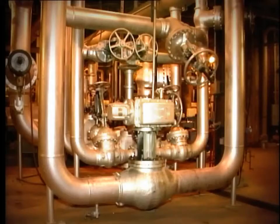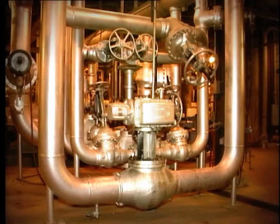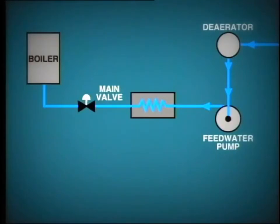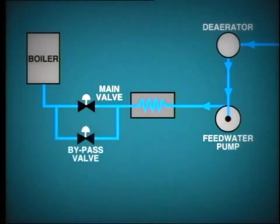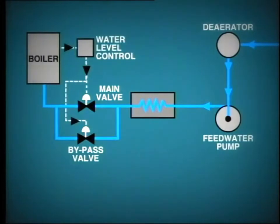One of the most common forms of boiler feedwater control is affected through a modulating feedwater control valve. This valve is usually operated according to signals from the boiler control system. In order to provide finer control at low loads, a small bypass is usually fitted complete with a control valve. The two valves operate together in response to signals from the boiler water level control system.